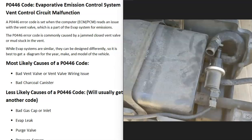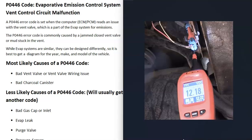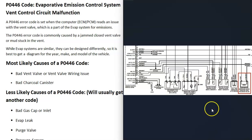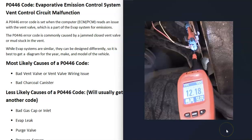If the vent valve is good, the next thing to do is test the wiring. Be sure to get schematics for your vehicle since there can be differences, but usually one pin has 12 volts going to it and the other pin goes back to the computer, which commands it on or off. Test that you're getting 12 volts on one wire, and then test the wire going back to the computer to see if there's an open, short, or some other issue.